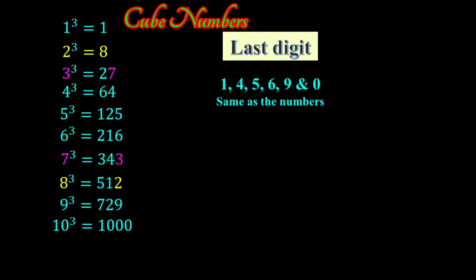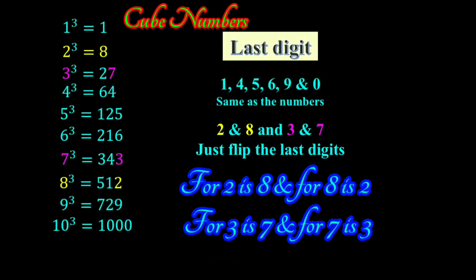The easy way to remember this is that for the numbers one, four, five, six, nine, the last digit is the same as the numbers. The last digits for two is eight and for three is seven. Just flip it.